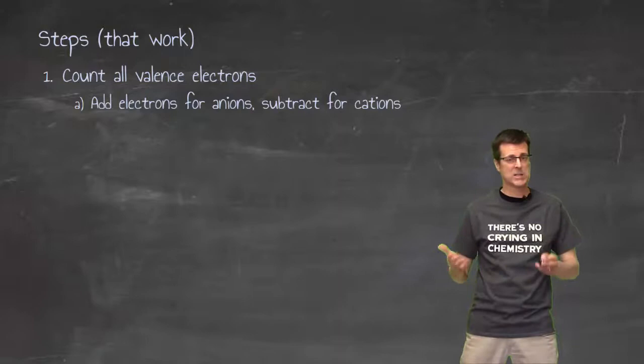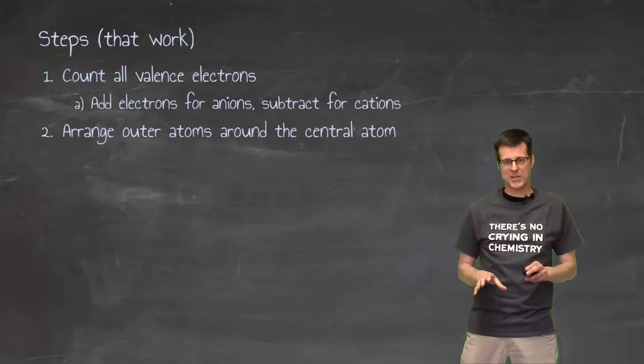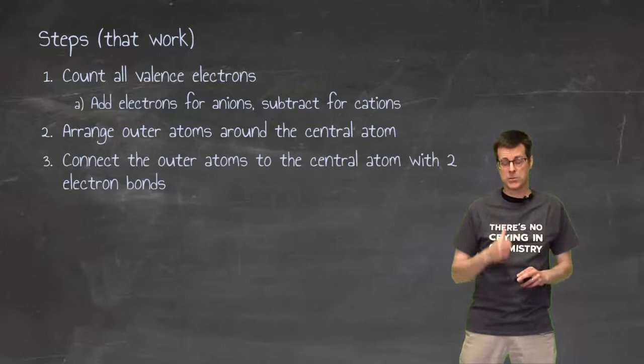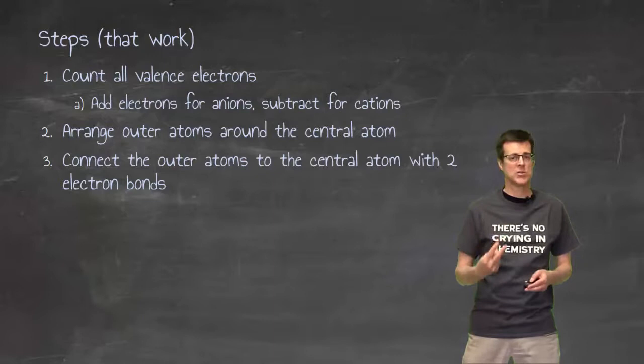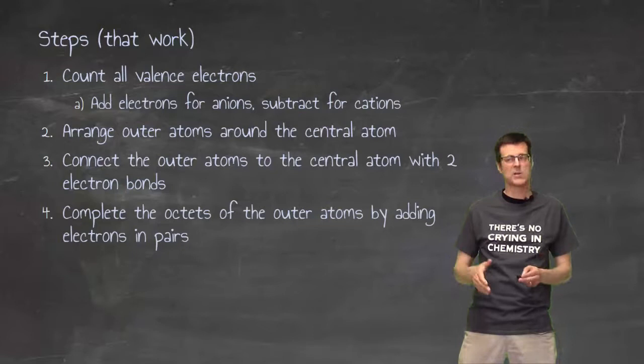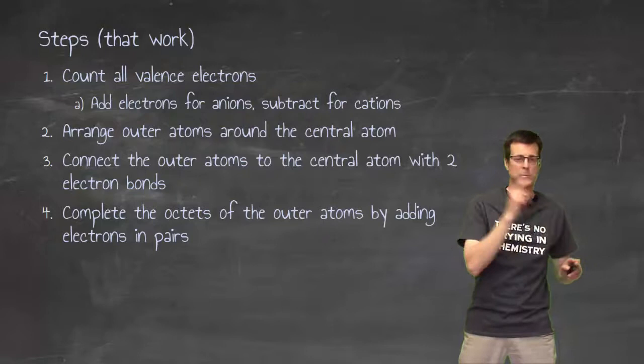You're going to arrange the outer atoms around a central atom, which means we're going to need to identify a central atom. You'll notice that we haven't put electrons on yet. We're just putting down the atoms, or at least the kernel of the atom. Then you're going to connect the outer atoms to the central atom with bonds. You're just going to put single bond, single bond, single bond. Every bond is two electrons. Then you're going to complete the octets of the outer atoms by adding electrons in pairs. Not every single outer atom will have an octet, but most of them do.